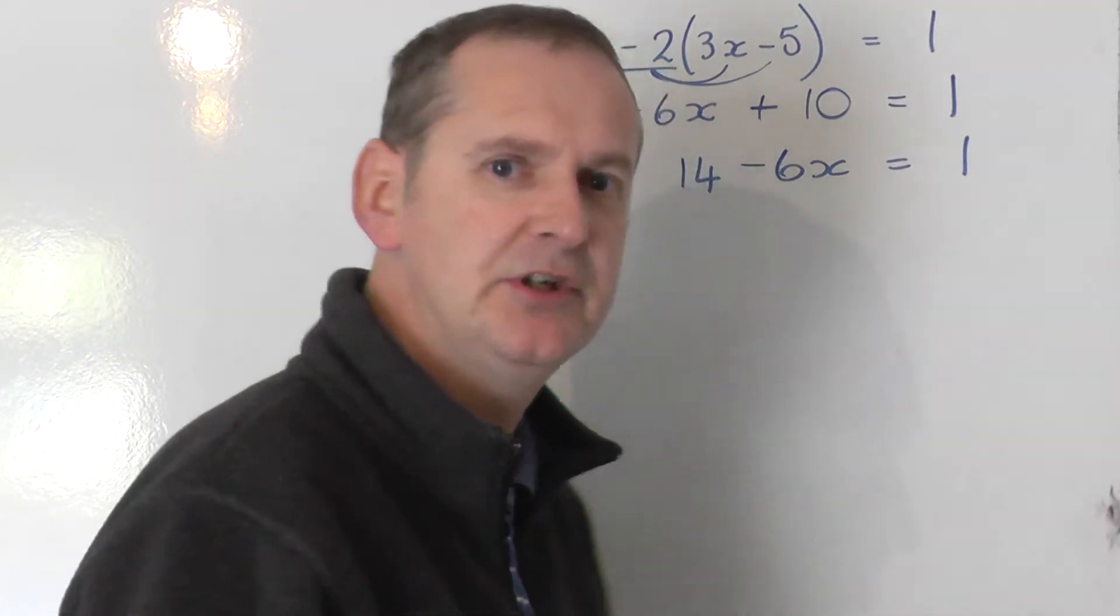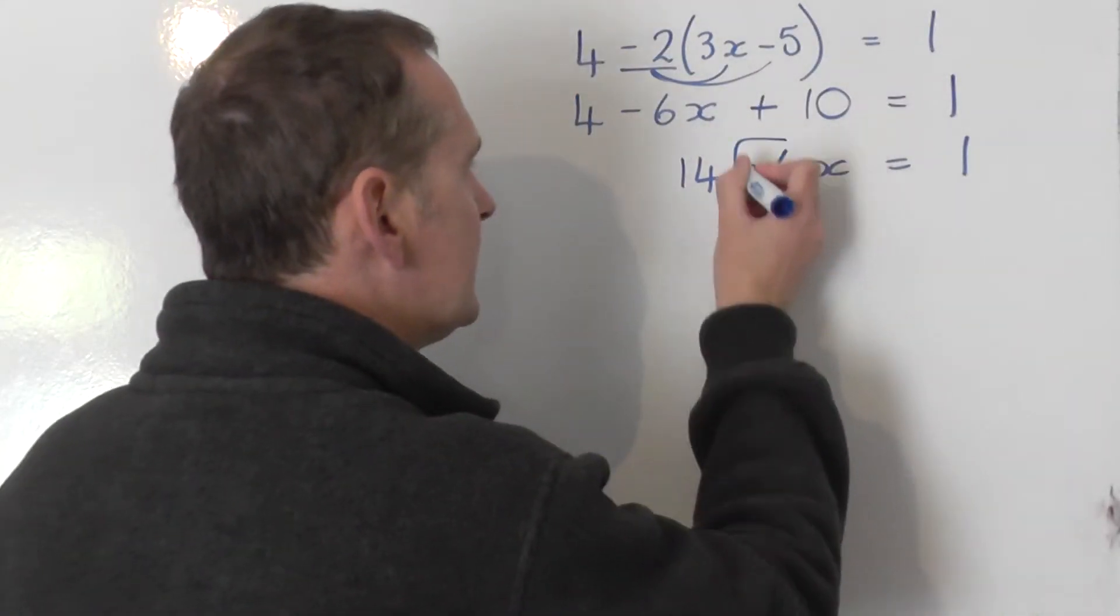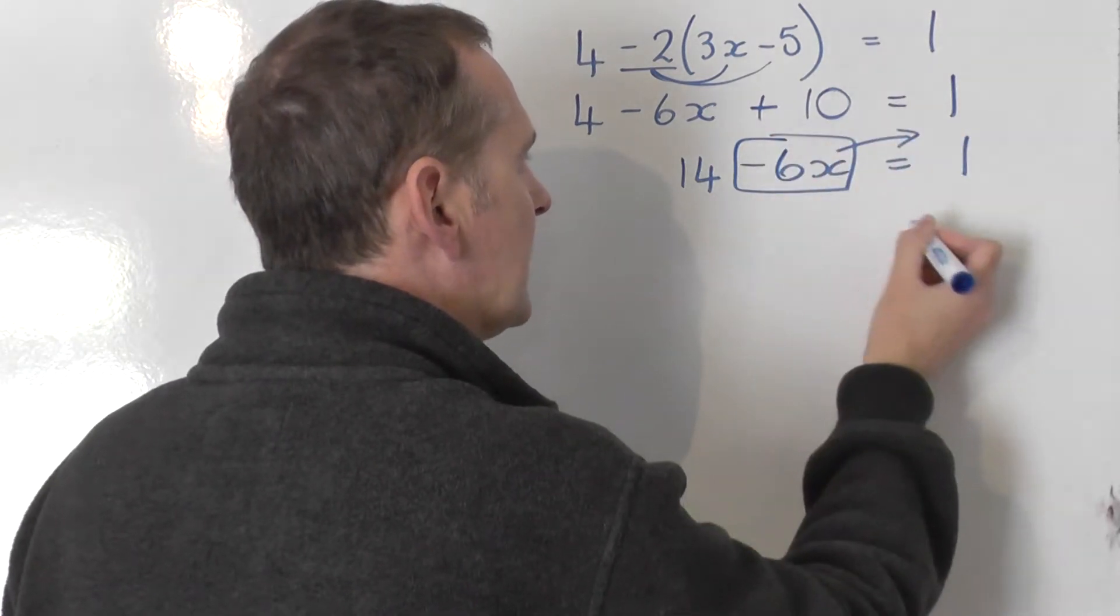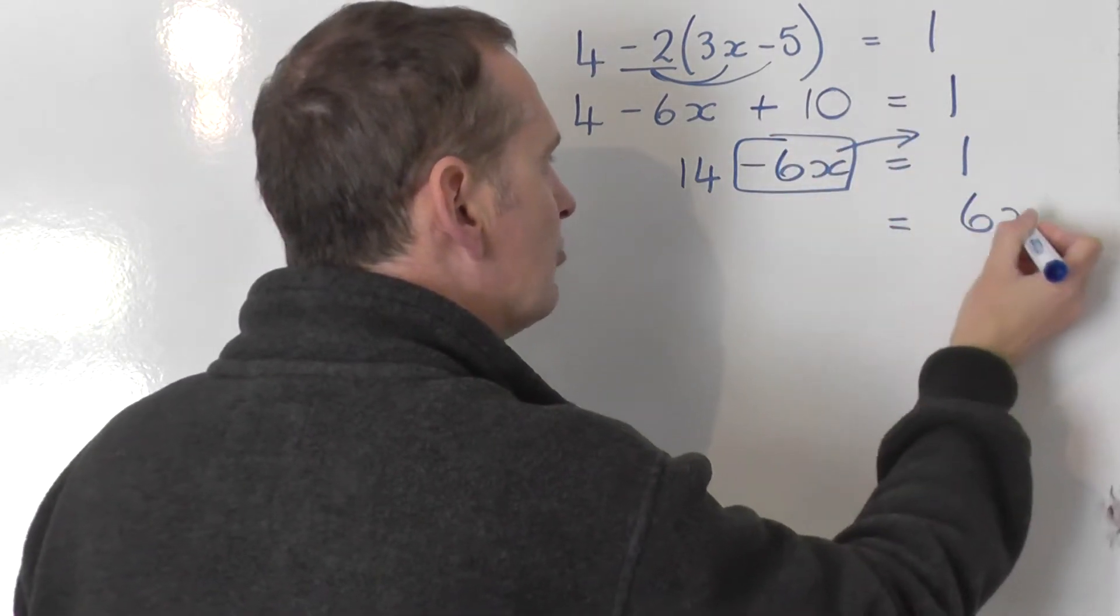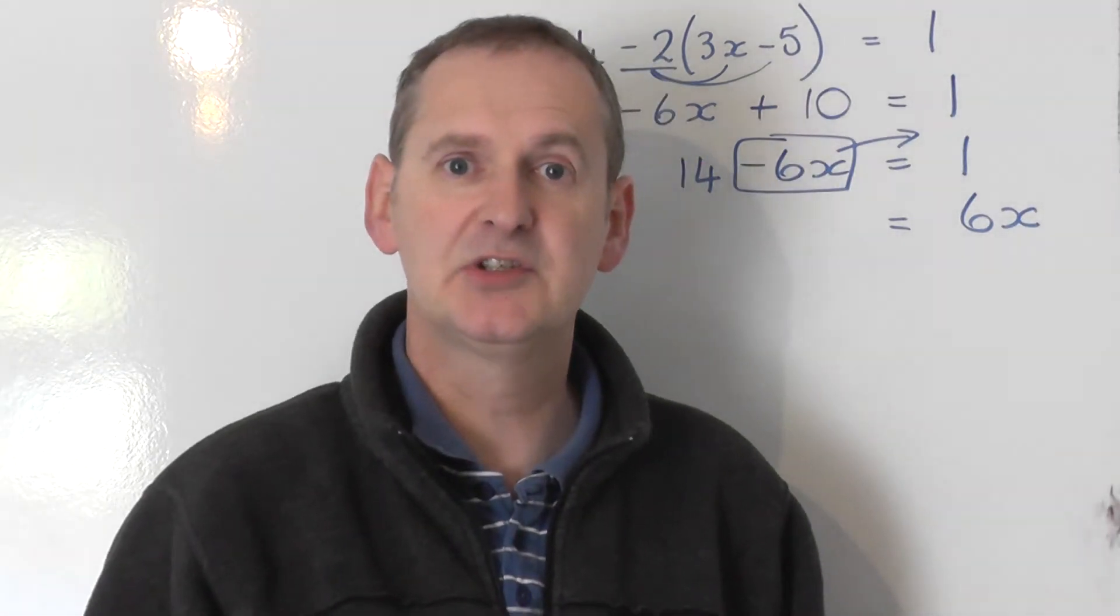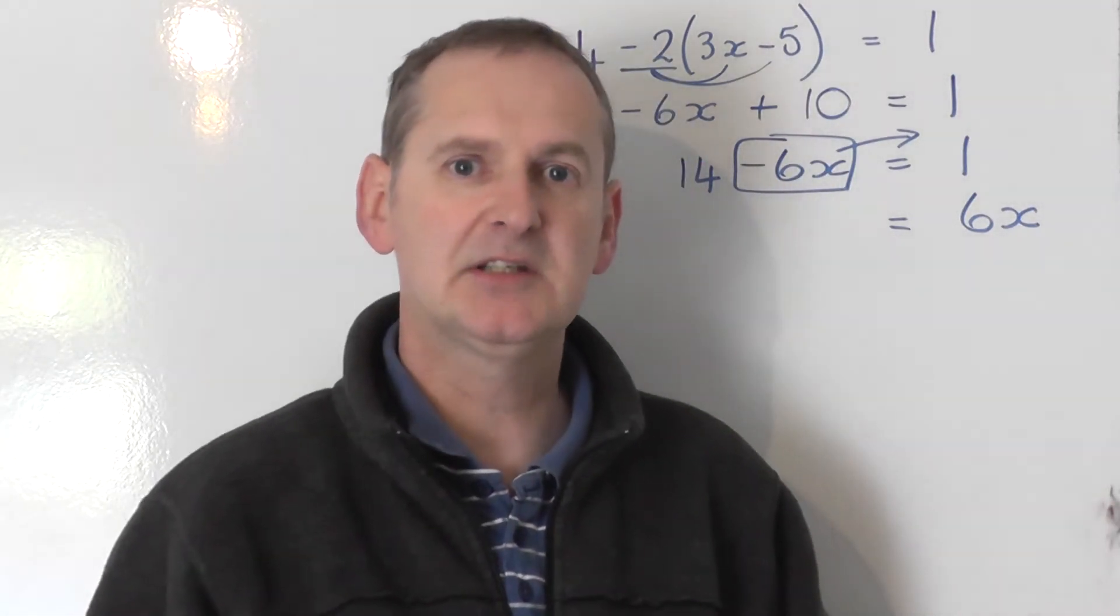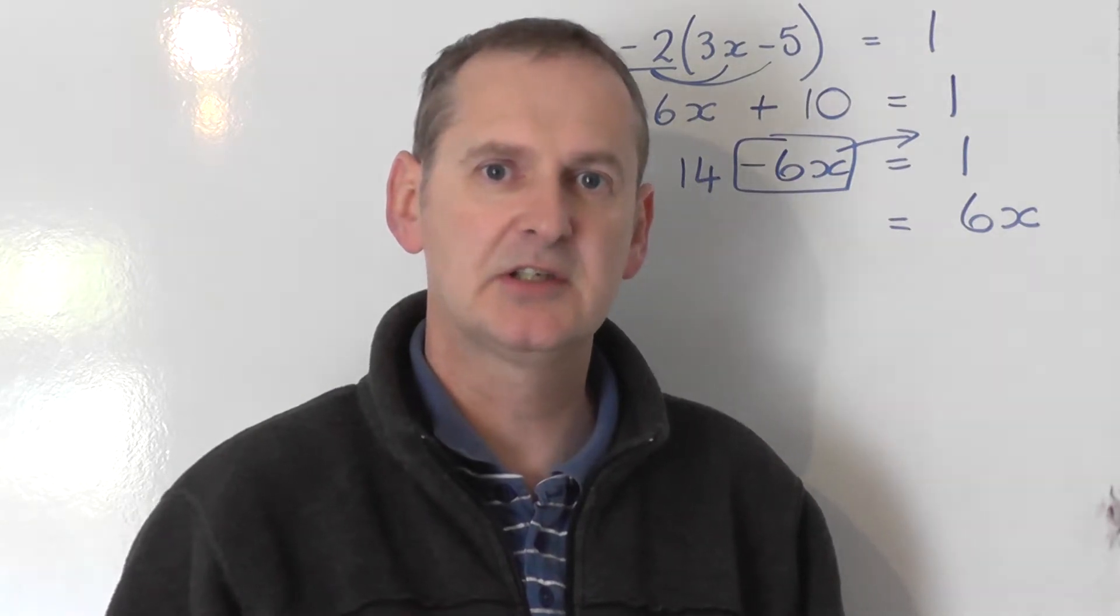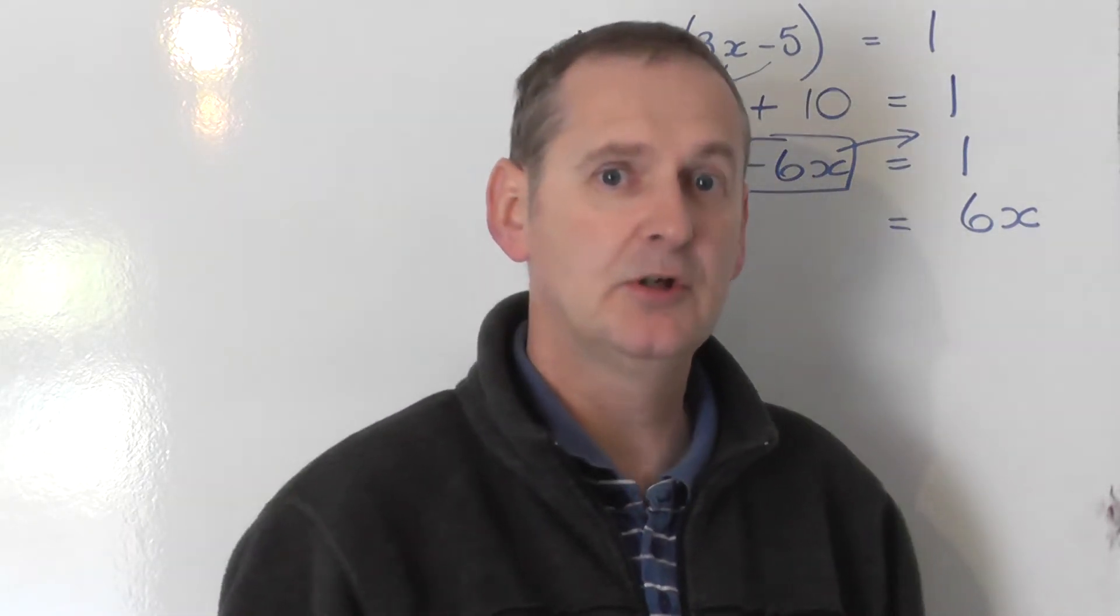So what I would suggest you do in this example is actually take the minus 6x and take the x, in this case, to the right, where it swaps signs because it swaps sides. So by taking the minus 6x to the right, we get plus 6x. And we do want plus x. So that's good.